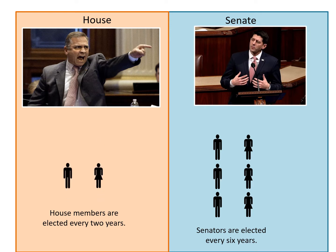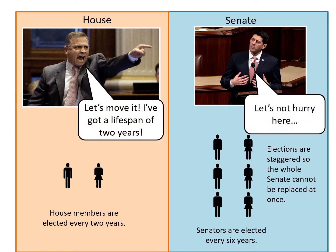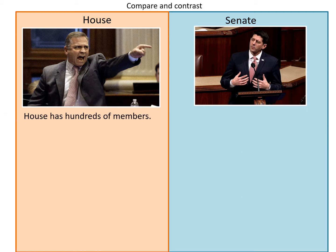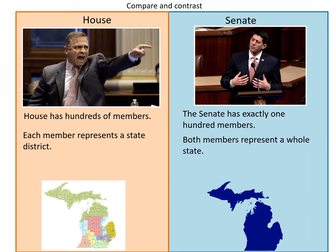The House is elected every two years, and the Senate is elected every six years. The Senate has its elections staggered so that parts of it are elected every two years, but each person in the Senate has six years before their election comes back — that's so the Senate cannot be replaced all at once. The House has hundreds of members; the Senate has exactly 100 members. Each member of the House represents a state district, not the whole state, but in the Senate, both members are expected to represent the whole state.